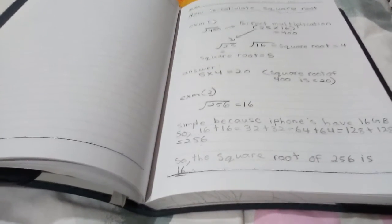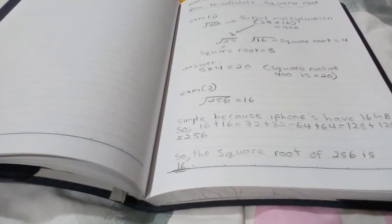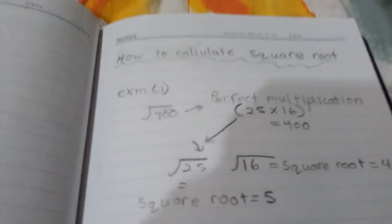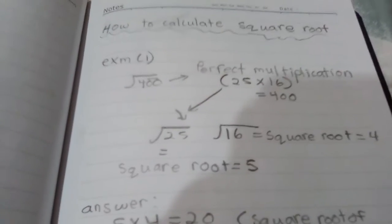You have to get a perfect multiplication. So 25 times 16 is 400 as you can see there. It's the perfect multiplication. So you get 400 from 25 with 16.